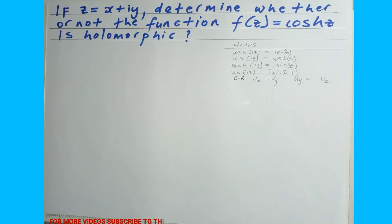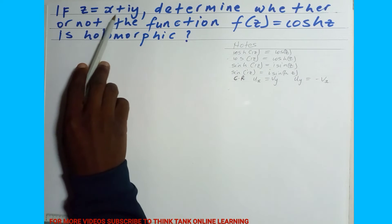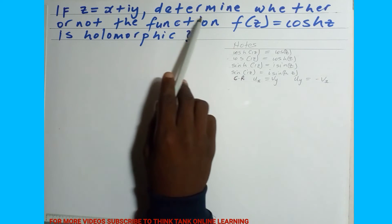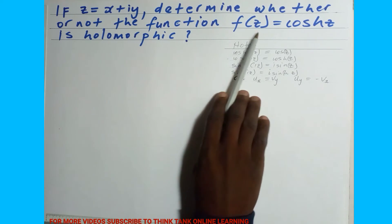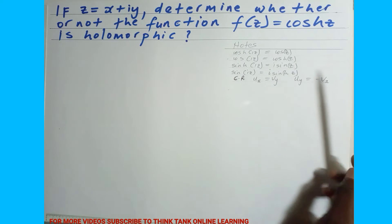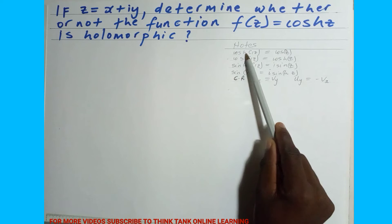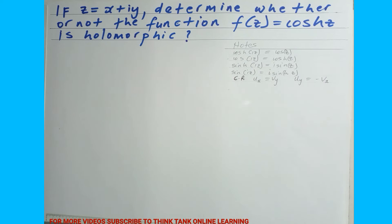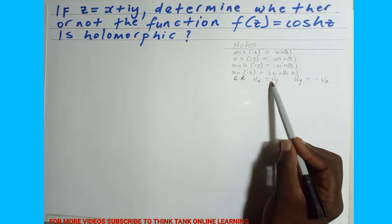Welcome back to Think Tank Online Learning. In this video we want to prove whether the function is holomorphic or not. Given that z is a complex number x plus iy, we want to determine whether the function f(z) = cosh(z) is holomorphic. We're going to use the Cauchy-Riemann equations, where the partial of u with respect to x should equal the partial of v with respect to y.